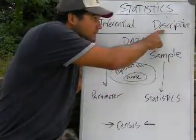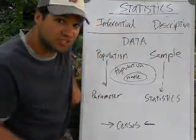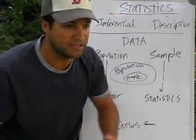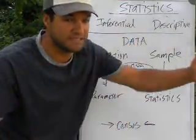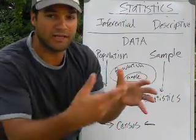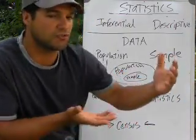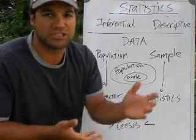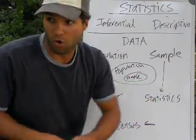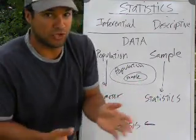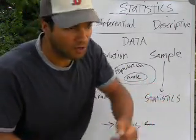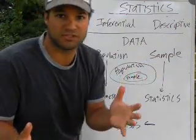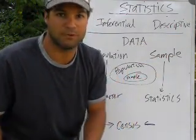Descriptive statistics is just taking some data and talking about it. Basically, here's some data I collected and here's what I saw. Here's a picture of it, here's the average of all the data, here's the average test score, most people like sausage pizza. This is doing just descriptive statistics — describing what you see.